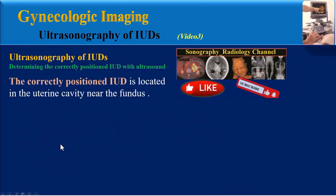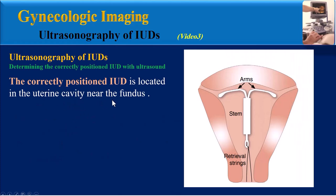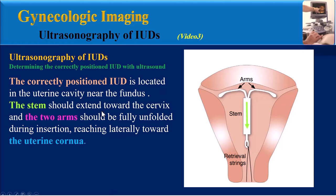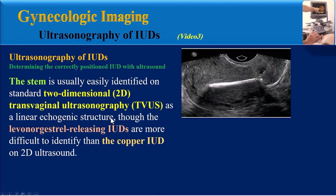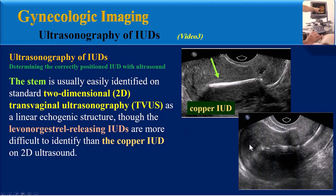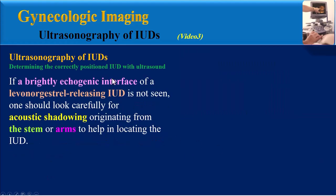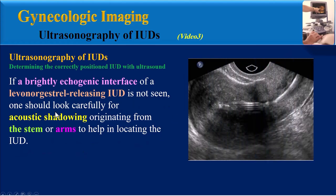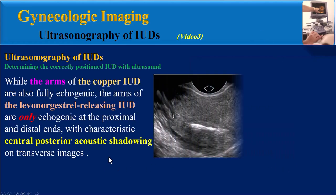The correctly positioned IUD is located in the uterine cavity near the fundus. The stem should extend toward the cervix, and the two arms should be fully unfolded during insertion, reaching laterally toward the uterine cornua. The stem is usually easily identified on standard 2D transvaginal ultrasonography as a linear echogenic structure. Mirena IUDs are more difficult to identify than copper IUDs on 2D ultrasound. If a brightly echogenic interface is not seen, one should look carefully for acoustic shadowing originating from the stem or arms.